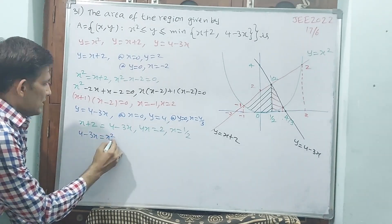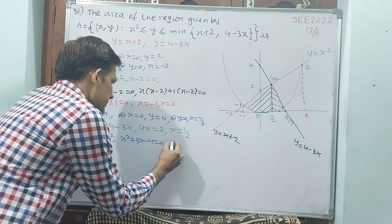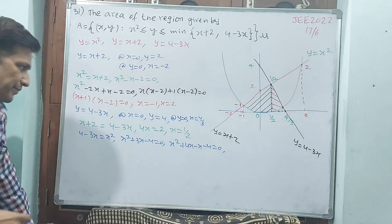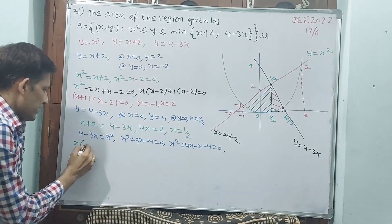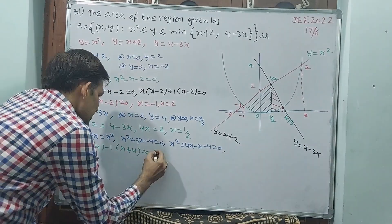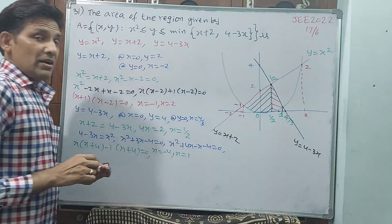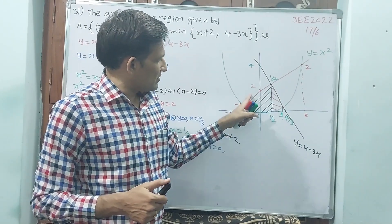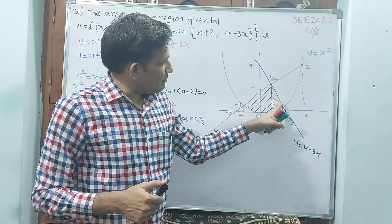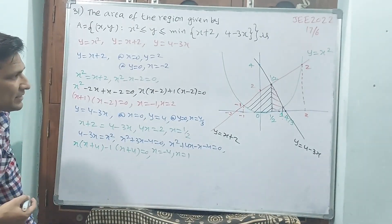Setting 4−3x = x²: x² + 3x − 4 = 0, which factors as (x+4)(x−1) = 0, giving x = −4 and x = 1. So x = 1 is the relevant intersection. Therefore the area is split: from −1 to 1/2 use the line x+2 minus the curve x², and from 1/2 to 1 use the line 4−3x minus the curve x². The answer should come out to 17/6.